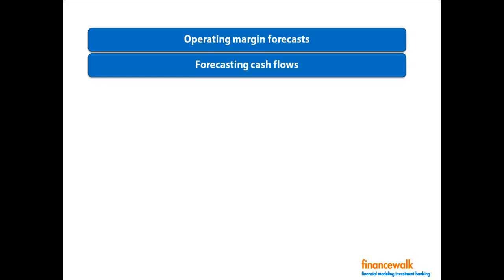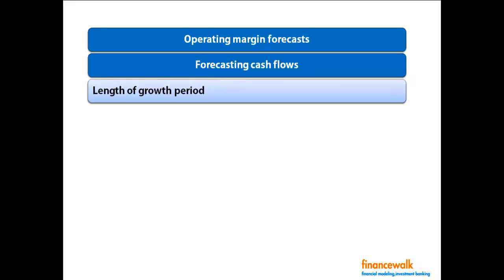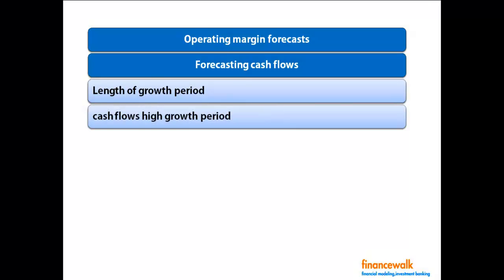There are three components to forecasting cash flows. First is the length of the extraordinary growth period — consider size of the firm, existing growth rate, excess returns, and magnitude and sustainability of competitive advantages. Second is the cash flows during the high growth period. Third is the terminal value calculation after the forecasting period.